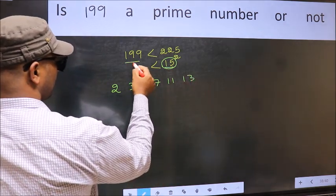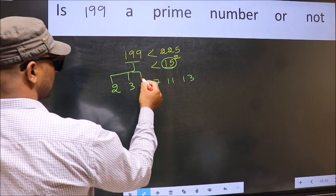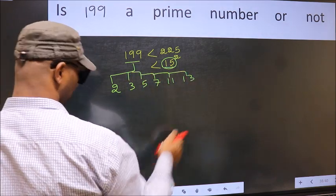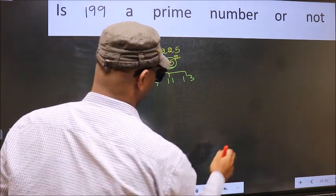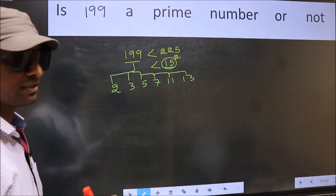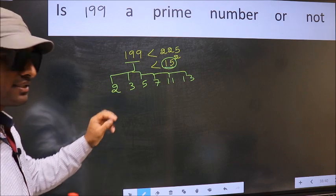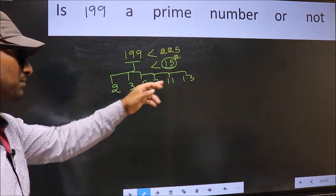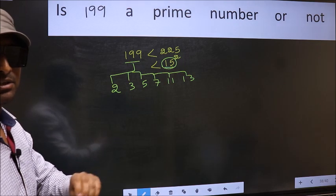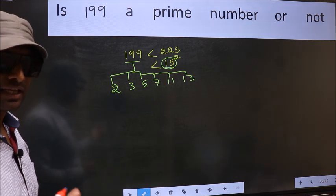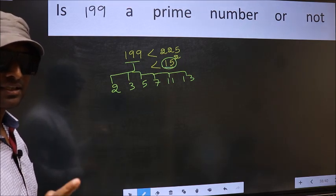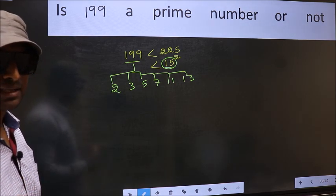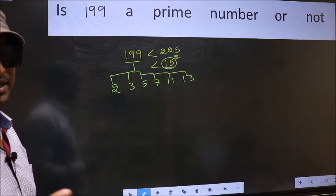For the given number, we should check divisibility by all these numbers. If the given number is divisible by any one of these numbers, we say it is not a prime number. Otherwise it is a prime number. Did you understand the method? Let us check divisibility.